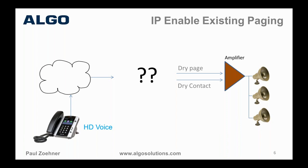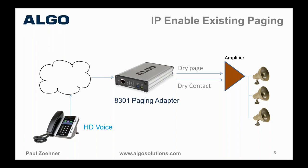This is where the Algo 8301 was really intended — the application it was specifically designed for. On the left side we have a POE IP interface, whether SIP or multicast, to the network — very friendly from the network side, administered through a web interface. On the right side we emulate the dry page port that you would have had from the old-style phone system, and you get a lot of features with this device.